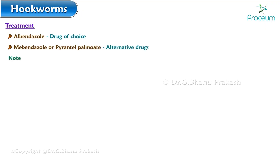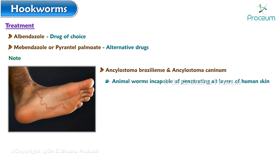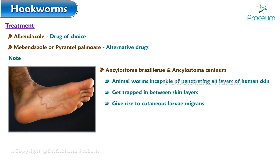Note: Ancylostoma braziliensis and Ancylostoma caninum are animal worms incapable of penetrating all layers of human skin. Therefore, when they enter humans, they get trapped between skin layers and give rise to cutaneous larva migrans, in which worms are visible under the skin. That's all for the video.